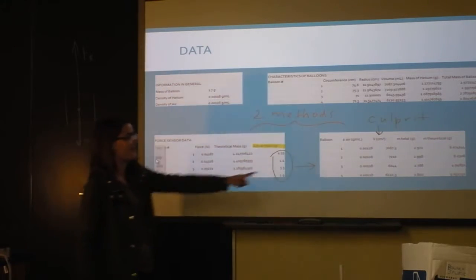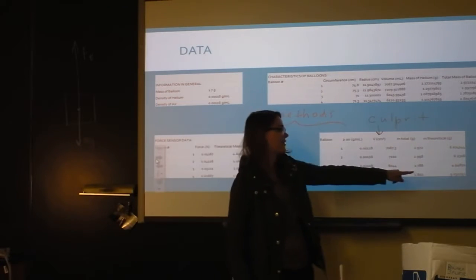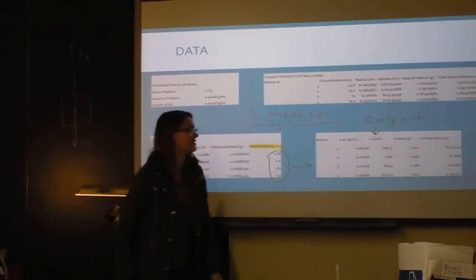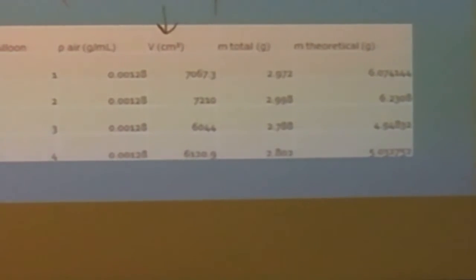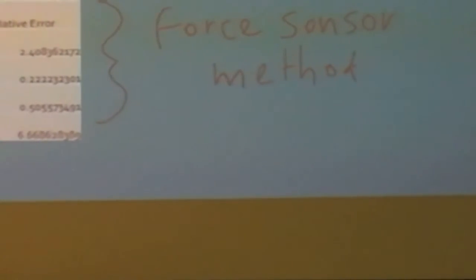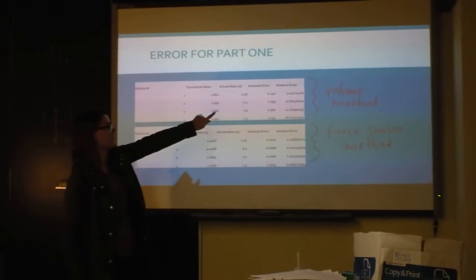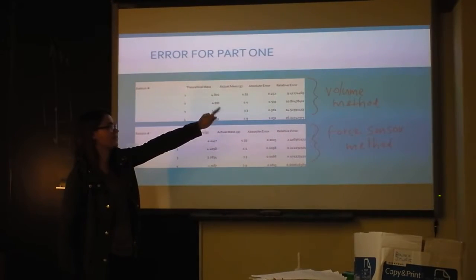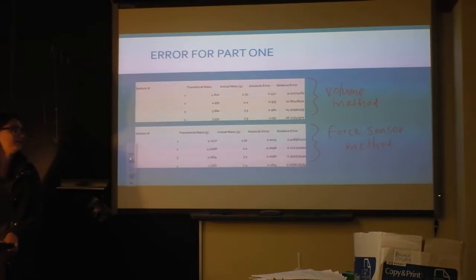The other way I figured out how much mass to add was using the volume. As you can tell, the theoretical mass from the volume method is enormous compared to the actual mass I had to add, because the calculated volume was much larger than reality — a balloon is not a sphere. The error for the volume method was a lot larger than the force sensor method. The force sensor method was actually really accurate, probably because it was done by computers and not humans.